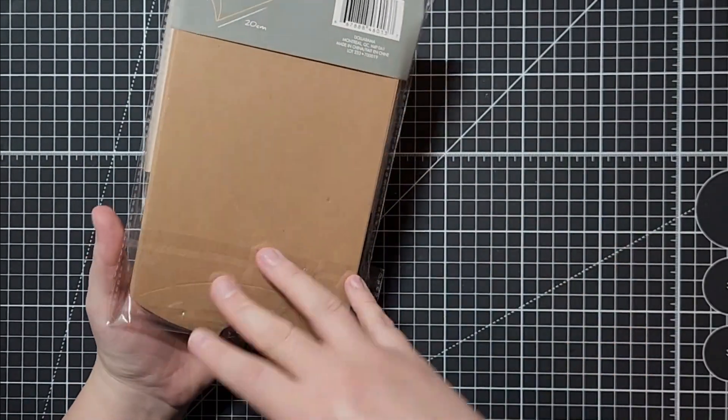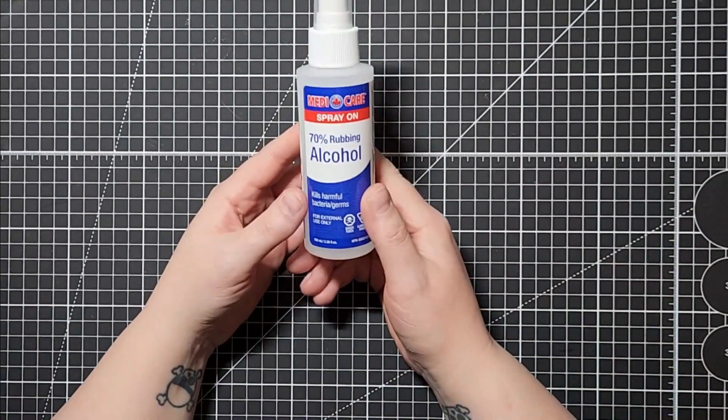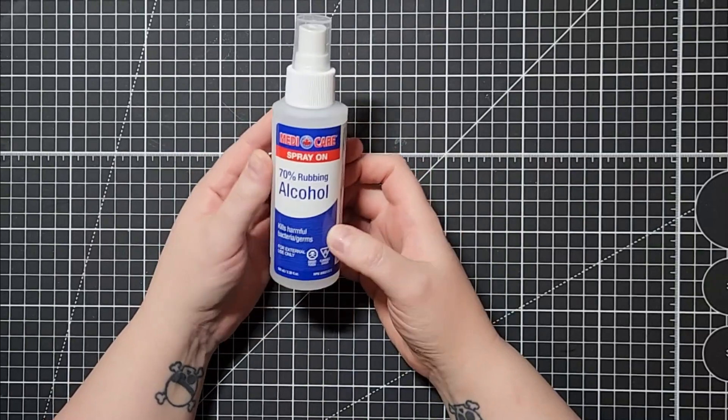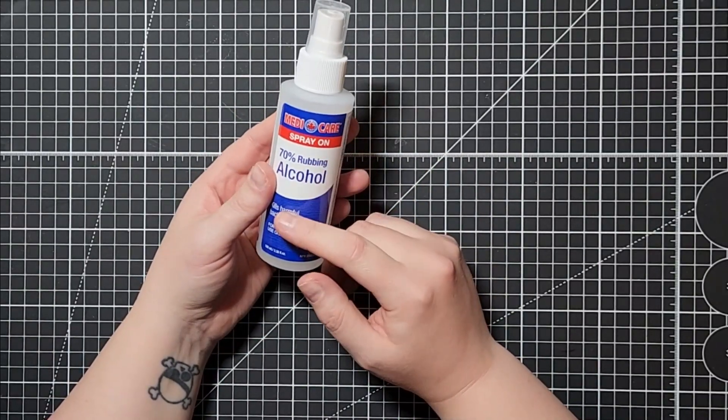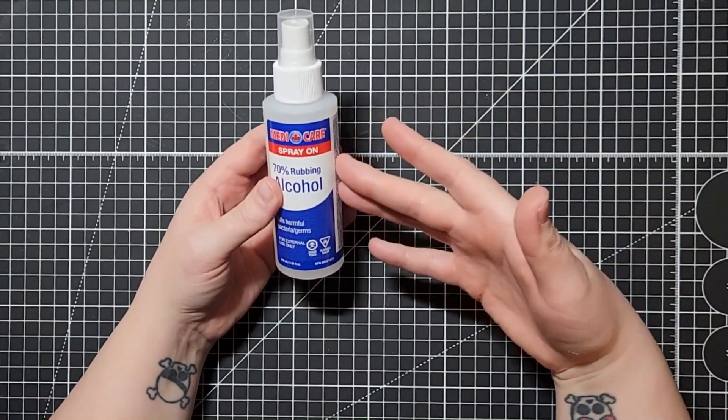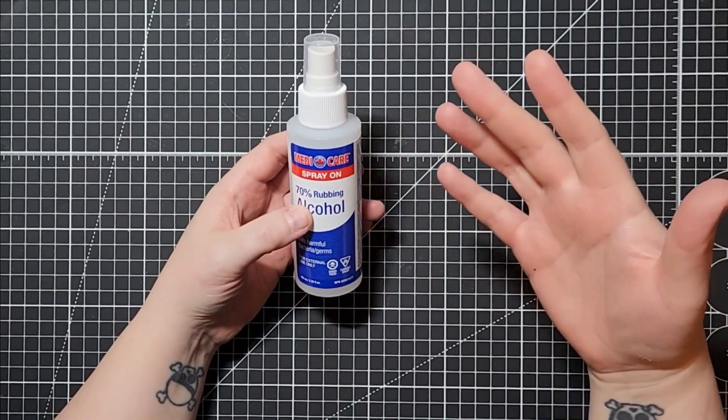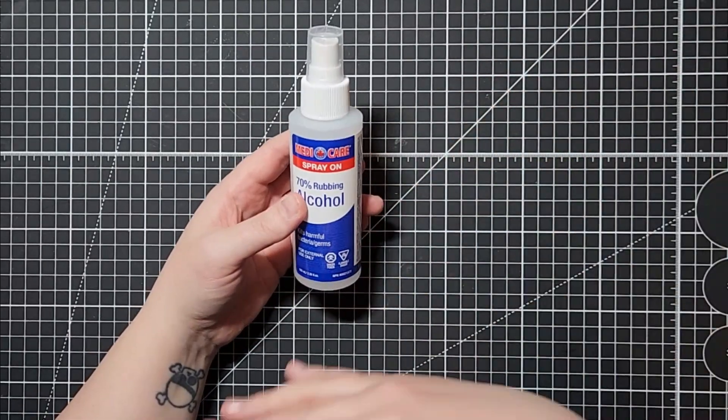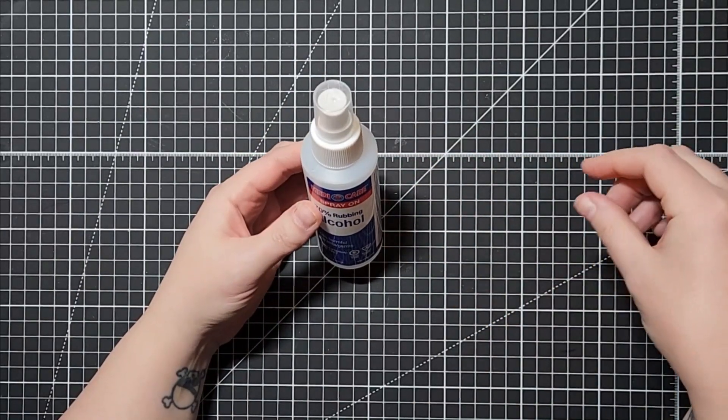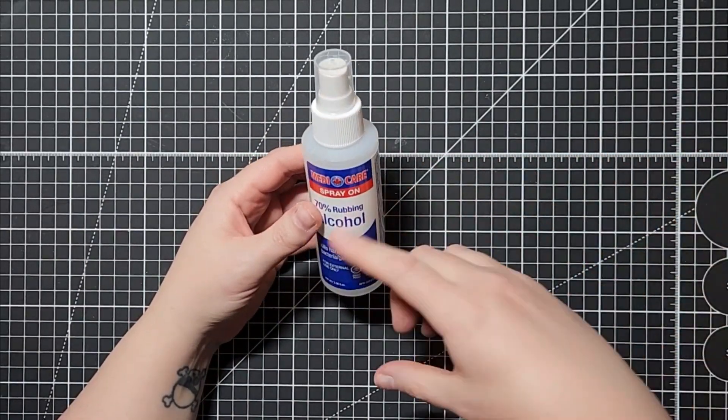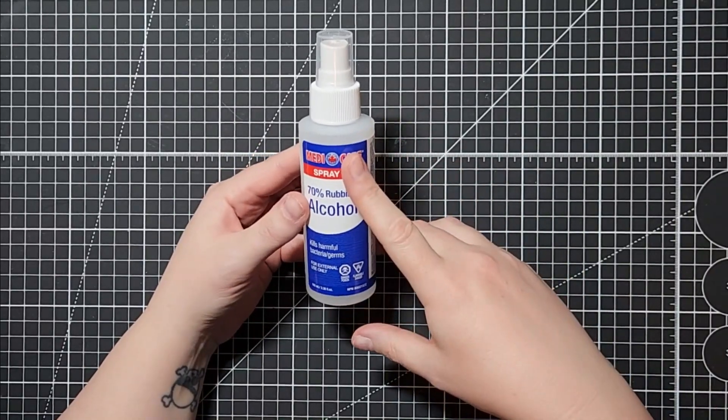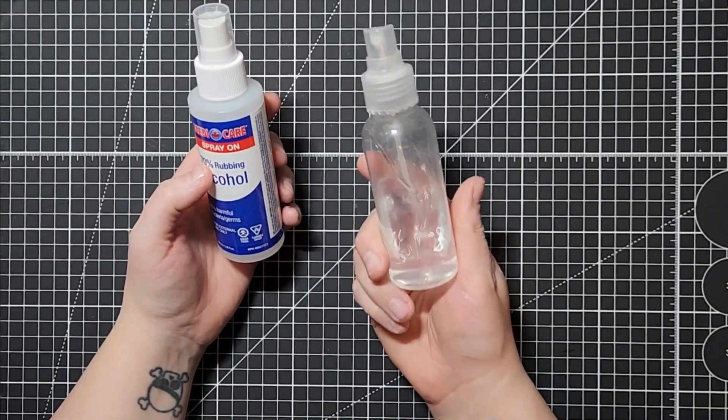Another thing you can do is go to the medical care section and get some rubbing alcohol. This is good if you want to do either alcohol inks techniques. This is good for cleaning off any of your tools, especially with alcohol markers this will just dissolve it and you can wipe it away. I always keep a bottle of this on hand. I also like to do some techniques with the alcohol markers with alcohol that I can show you in a future video.